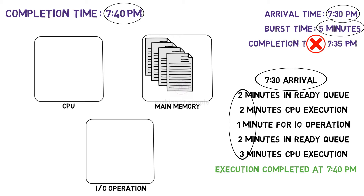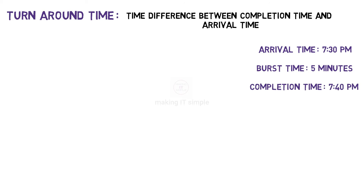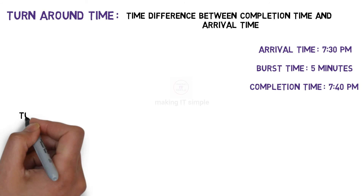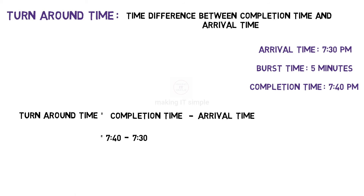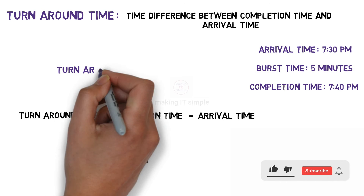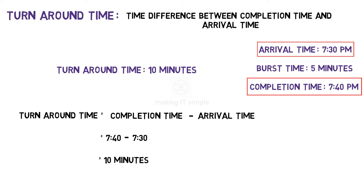Next is turnaround time — it is the time difference between completion time and arrival time. Our process arrived in the ready queue at 7:30 PM and got completely executed at 7:40 PM. To calculate the turnaround time, we subtract the arrival time from the completion time: 7:40 minus 7:30 gives us 10 minutes. So the turnaround time for our process is 10 minutes. It is the duration from arriving in the ready queue until the process is completely executed and terminated.